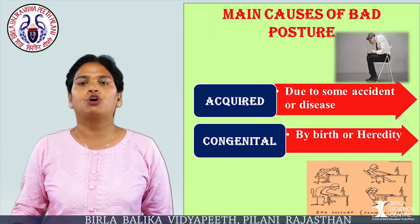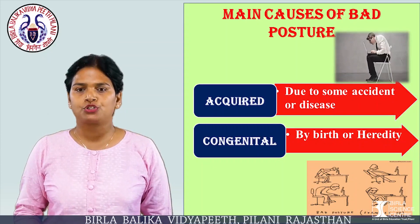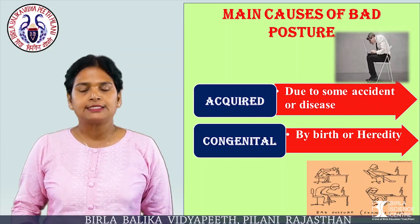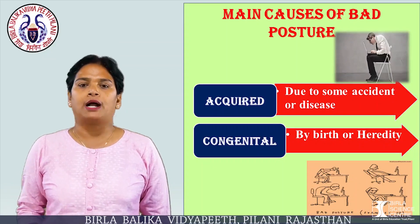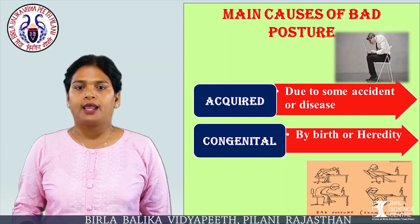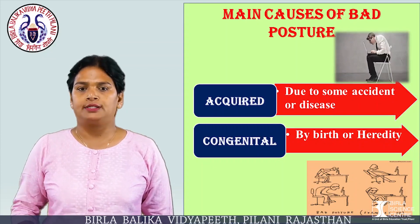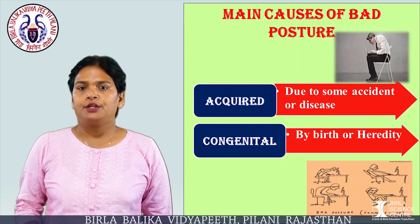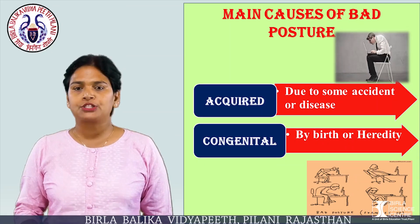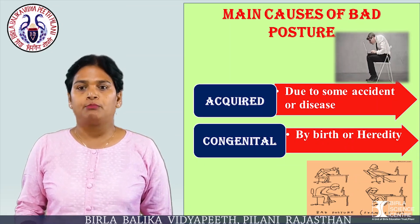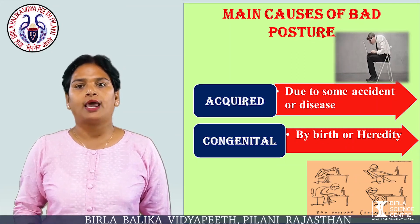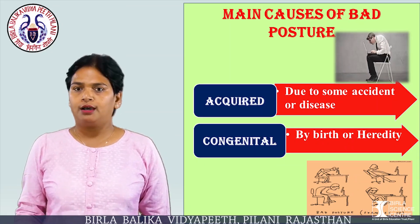Main Causes of Bad Posture. It is divided into two parts: Acquired and Cognitive. Acquired — due to some accident or disease. Cognitive — by birth or heredity.